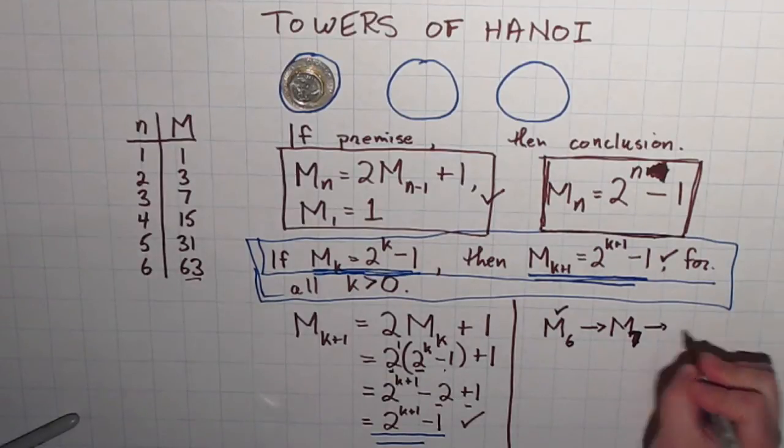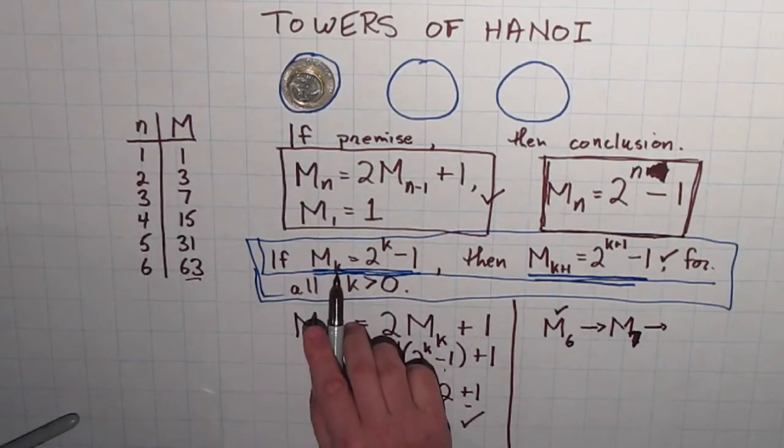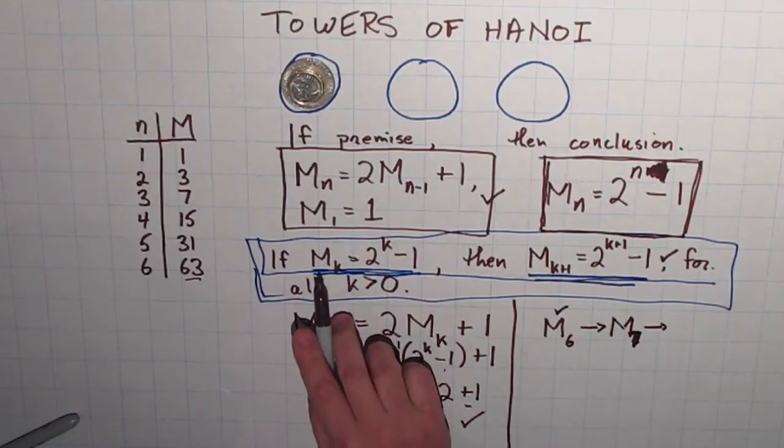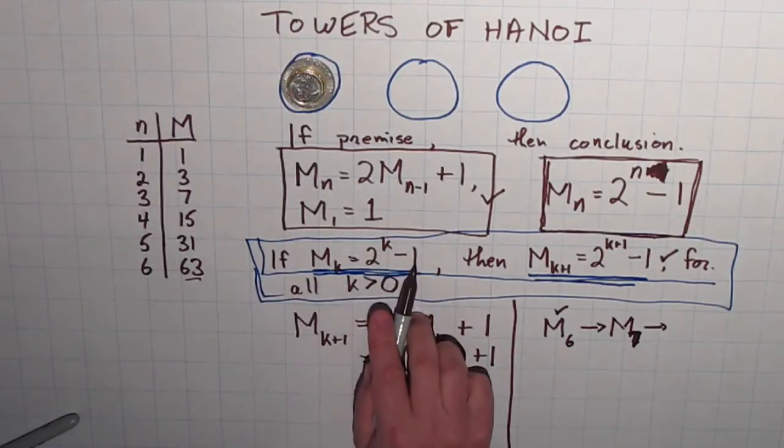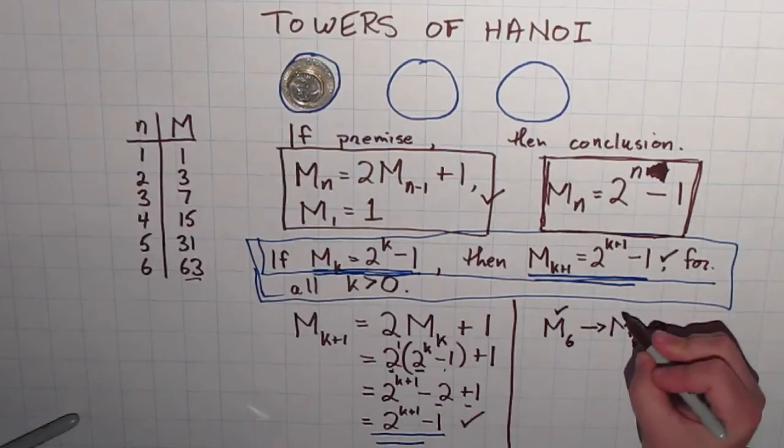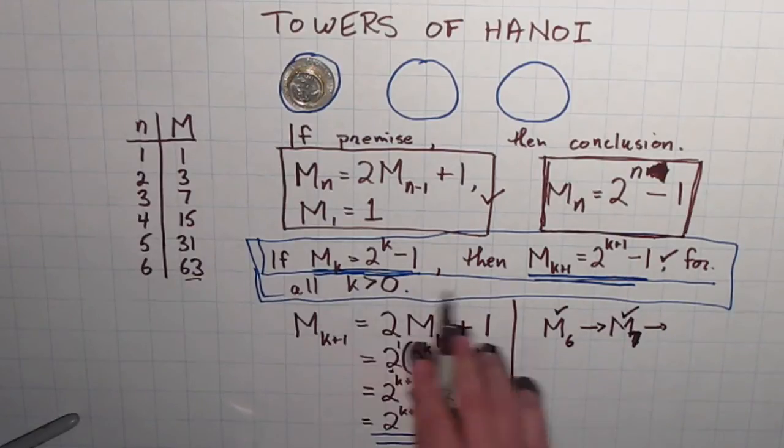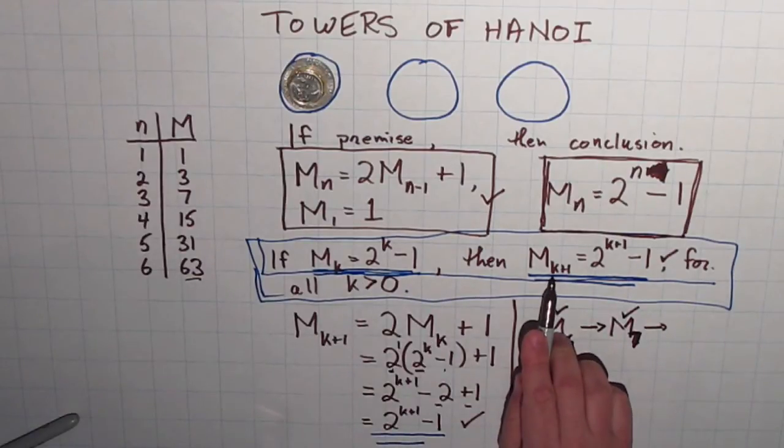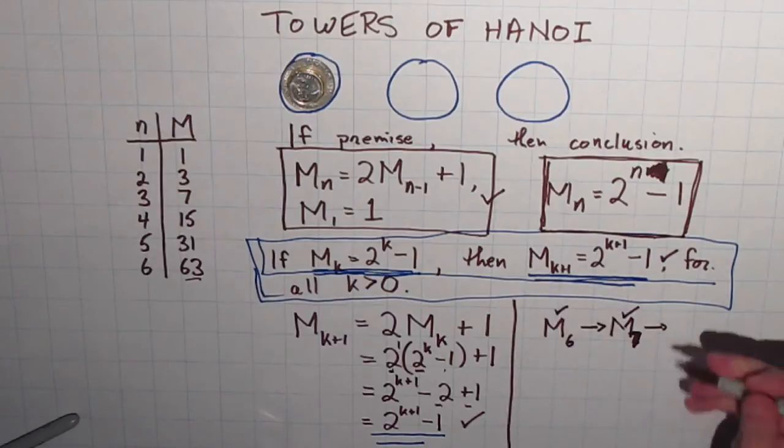And if it works for 7 coins, replace the k with a 7. If M_7 equals 2 to the 7 minus 1, which I now know to be true. Then, putting 7 in for the k here, M_8 equals 2 to the 8 minus 1. In other words, I know that it works for 8 coins.